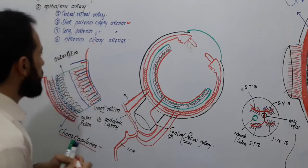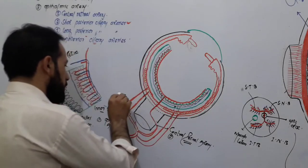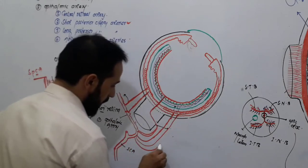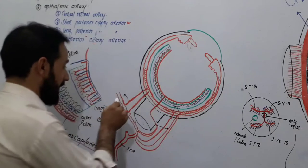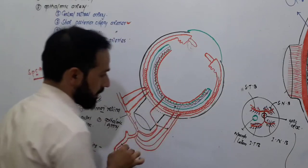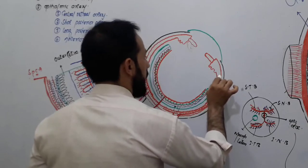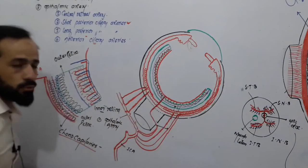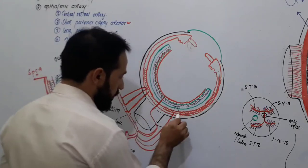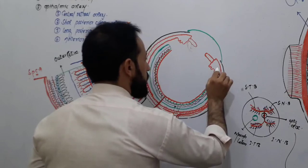Now let's move forward and discuss the long posterior ciliary artery and the anterior ciliary arteries. From the ophthalmic artery, there is another branch which separates, pierces the sclera, enters the eye into the choroidal layer, and then moves anteriorly towards the ciliary body. It is longer than the short ciliary artery, which is why we call it the long posterior ciliary artery — posterior because it enters from the posterior side.